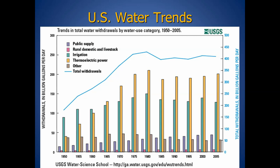Looking at U.S. water use trends from 1950 to 2005: back in the 1950s, irrigation was the biggest user of water. Then in the mid-1960s, power generation took over and has remained number one, with irrigation remaining number two. As the U.S. population has increased, public supply has increased as well.